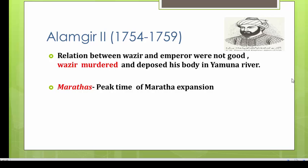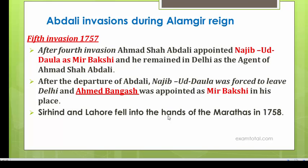During Alamgir II's rule it was the peak time of Maratha expansion, and it was evident that the next mighty power after the Mughals would be the Marathas. Invasions of Ahmad Shah Abdali also increased during his rule. From 1754 to 1759, Abdali attacked for the fifth time — in 1757 — having already attacked four times previously. After the fourth invasion, Abdali had appointed Najibu Dawla as the Mir Bakshi to remain in Delhi as his agent.